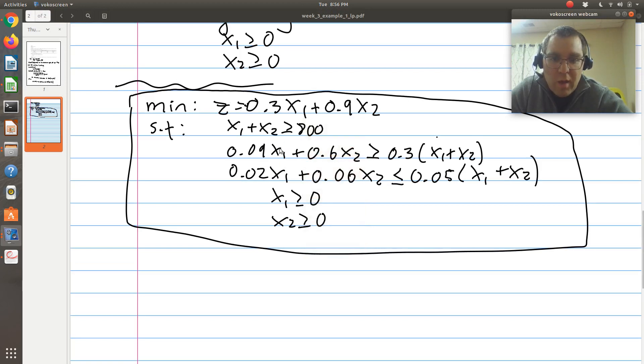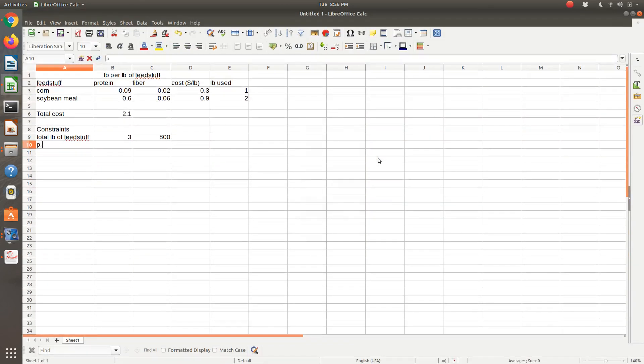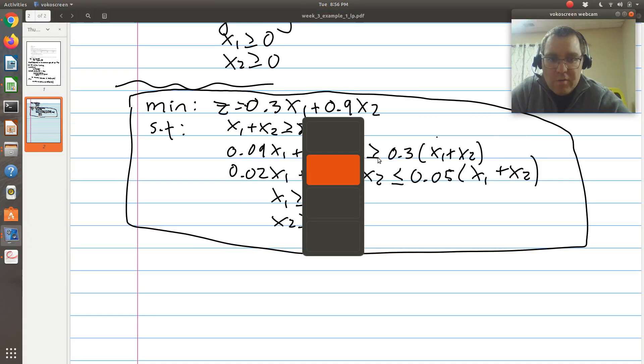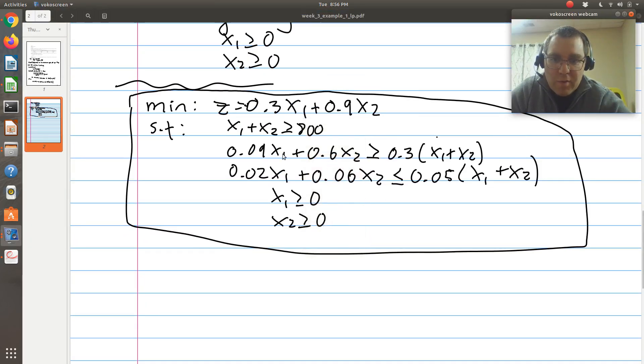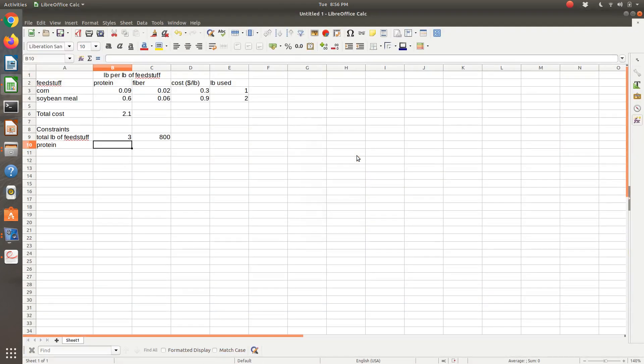Then constraint 2 and 3, this is our protein constraint and this is our fiber constraint. So I'm just going to say protein. And so the left-hand side is the protein per pound times the pound of corn plus protein per pound of soybean times the amount of soybean. So this is protein per pound of soybean meal times the total pounds of soybean meal.